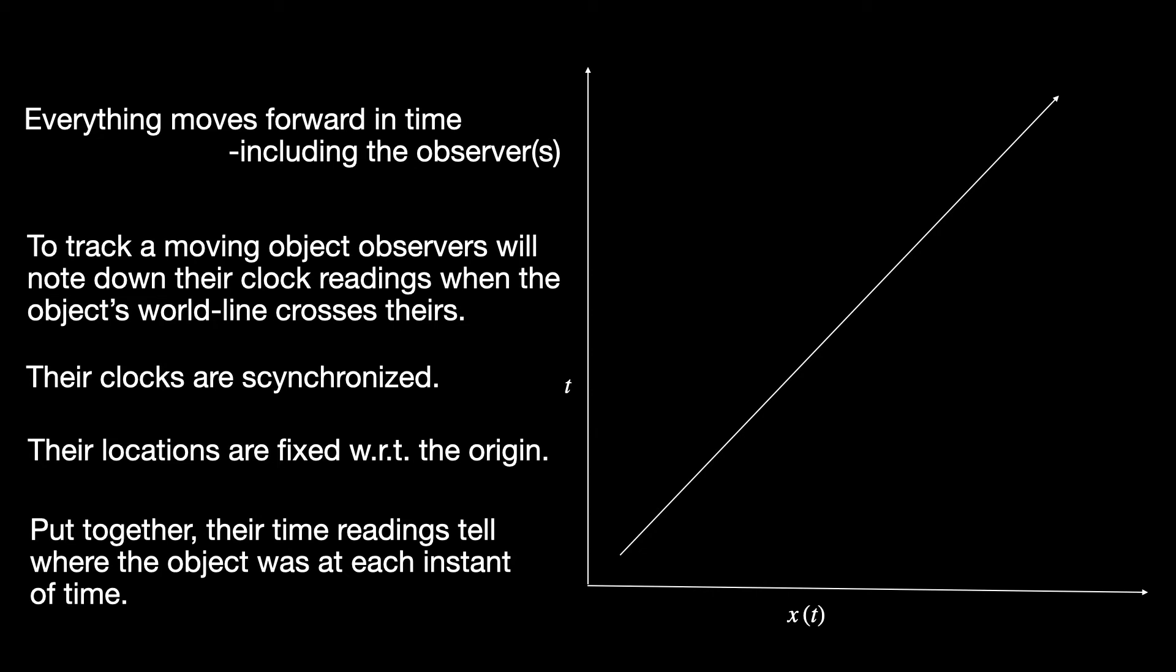Perhaps you have now realized why spacetime as a unified concept is more fundamental than space and time individually. Because in spacetime, we are always in motion. Even if we are at rest, we automatically move through time. So world line in a spacetime diagram gives us a more holistic view of an object's motion than tracing its path only through space.